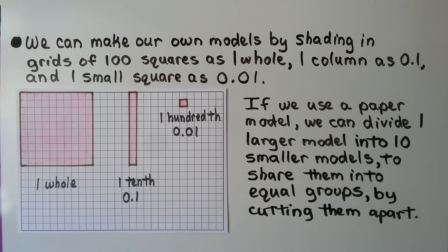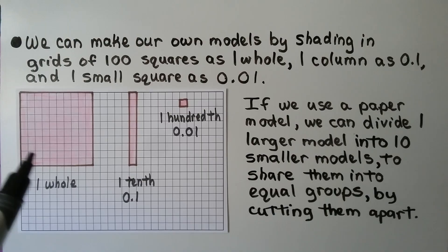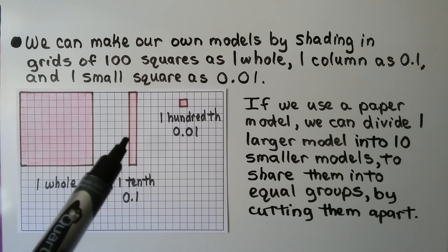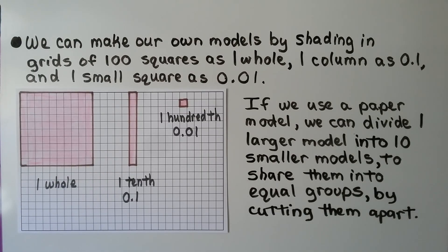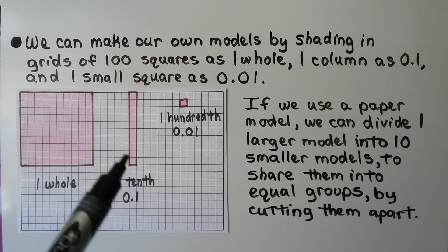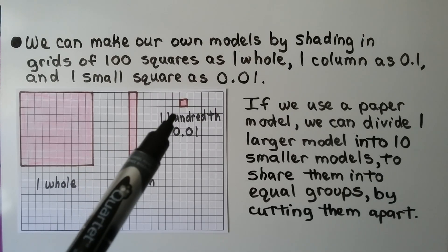We can make our own models by shading in grids of one hundred squares as one whole, one column as one tenth, and a small square as one hundredth. If we use a paper model, we can divide one larger model into 10 smaller models to share them into equal groups by cutting them apart. We could even cut one of these longs into ten hundredths.